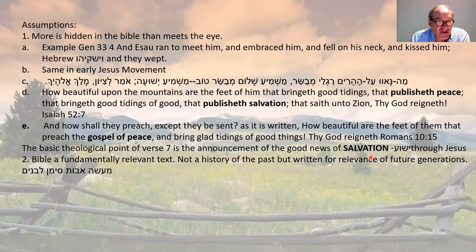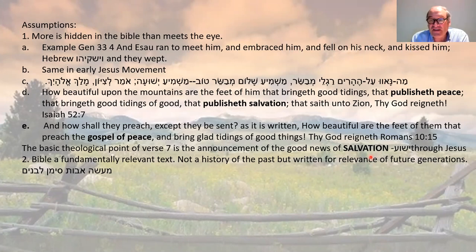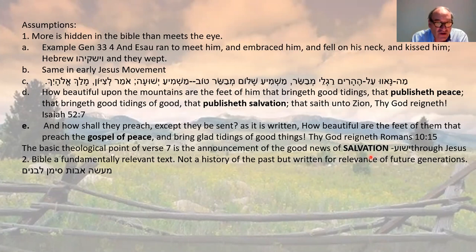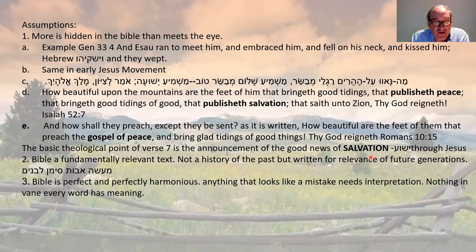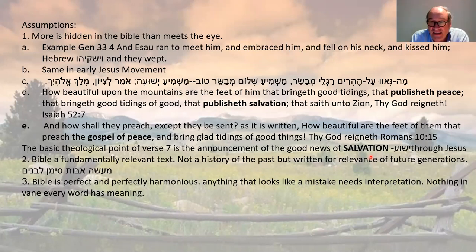Other basic assumptions: the Bible is a fundamentally relevant text, not a history book. It doesn't have footnotes. It's not a history of the past but written for the relevance of future generations. There's a famous Jewish saying: ma'aseh avot — the deeds of the fathers — are a siman, a sign for the sons. The Bible is perfect and perfectly harmonious. If anything looks like a mistake, it needs interpretation, because there can't be mistakes. Nothing is in vain — every word has a meaning, and the Bible is divinely inspired.